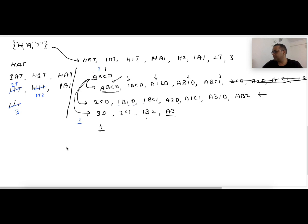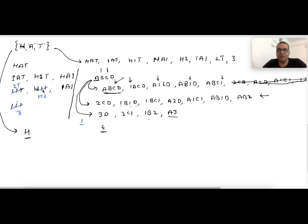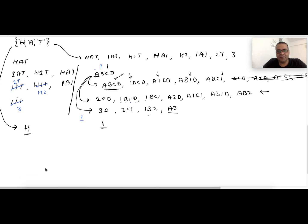Does it look like a permutation problem? Instead of swapping, we are placing digit one. Mathematically it is not exactly a permutation problem because H will always come at the first position — it cannot appear at the second position. But the logic of permutation will still apply. What you are saying is important: at the first position we fix H, then we fix one.